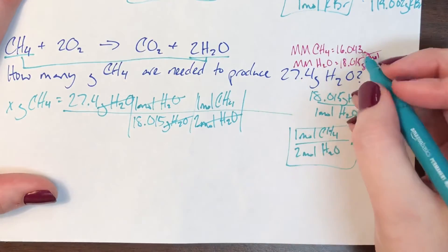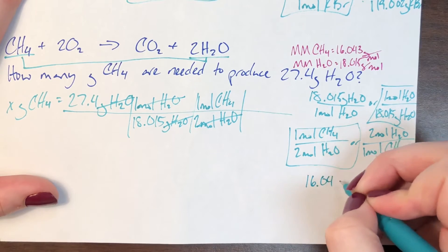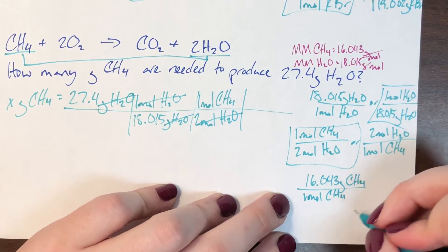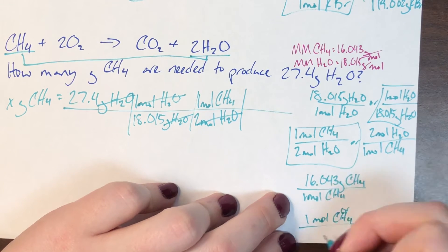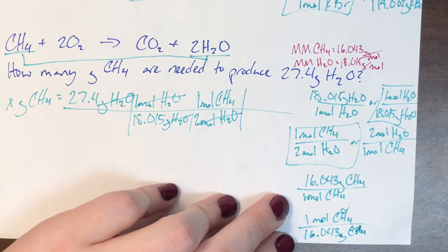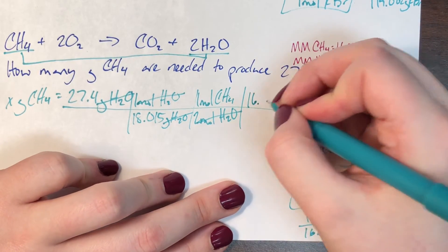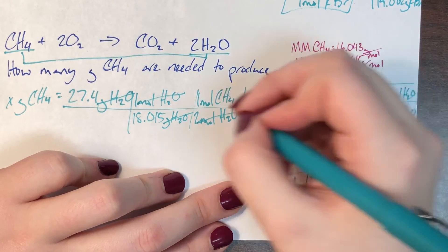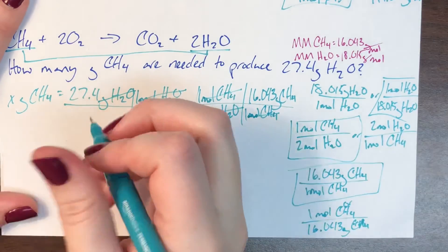I want grams, not moles, so I need the molar mass of methane. For every 16.043 grams of methane there is 1 mole, or for every 1 mole there are 16.043 grams. Moles of methane needs to be at the bottom to cancel, so I use the first version: 16.043 grams of methane on top and 1 mole of methane on the bottom. Moles of methane cancel, leaving grams of methane — the unit I said I wanted.